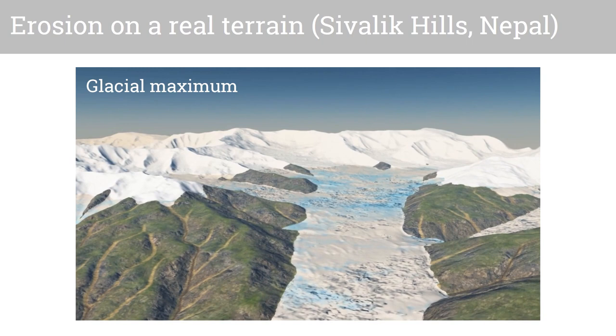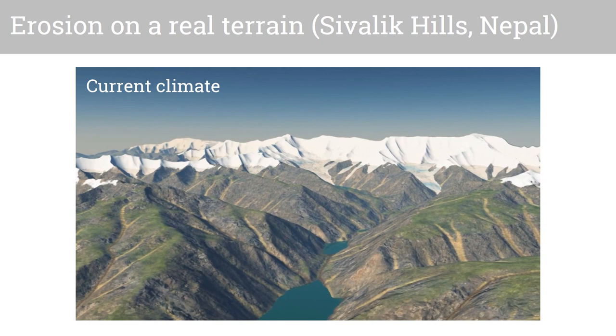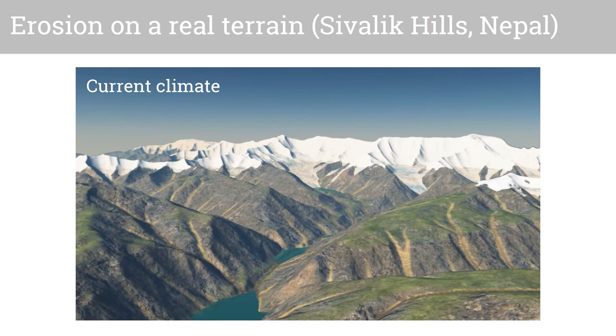We progressively lower the temperature to model 100,000 years of simulated glaciation, then quickly warm up the climate. This causes the glaciers to retreat, revealing the main glacial features.